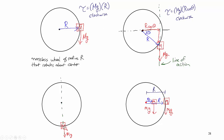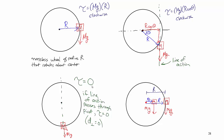In the third case, where the mass is at the 6 o'clock position on the wheel, the torque due to the weight of this object is going to be zero. The line of action passes right through the axis of rotation — the pivot point — so the perpendicular distance between the line of action and the pivot point is zero. If you hung a mass at this lowest point and let it go, it would just sit there, whereas the masses at the first two positions would cause the wheel to rotate clockwise.